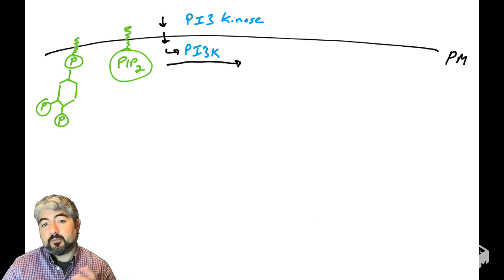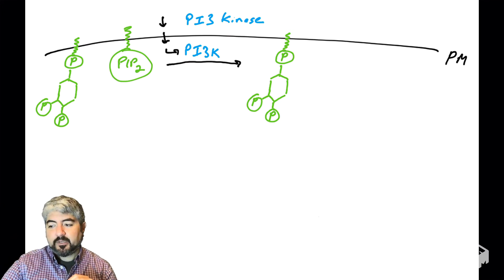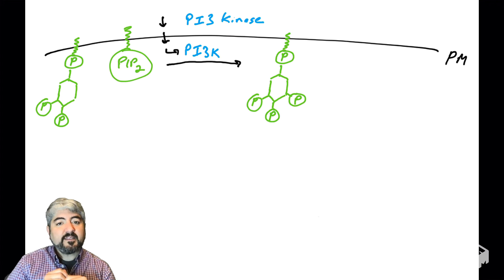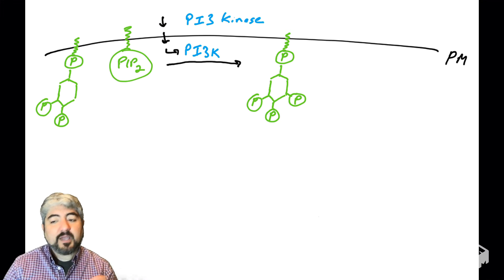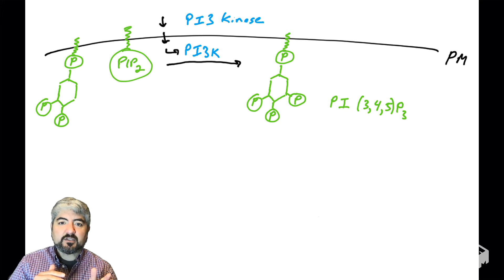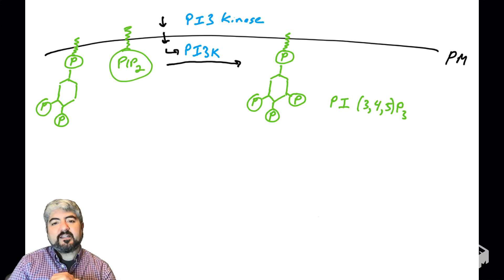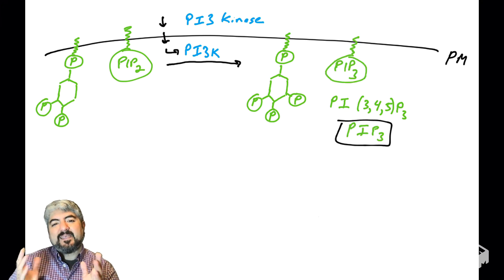So what is the product of this reaction? PI3 kinase grabs a phosphate off of ATP and puts it on the 3-prime hydroxyl of PIP2. The product is phosphatidyl inositol (3,4,5) phosphates — because those are the locations of the phosphates on the hydroxyls. The more common name for this molecule is PIP3.